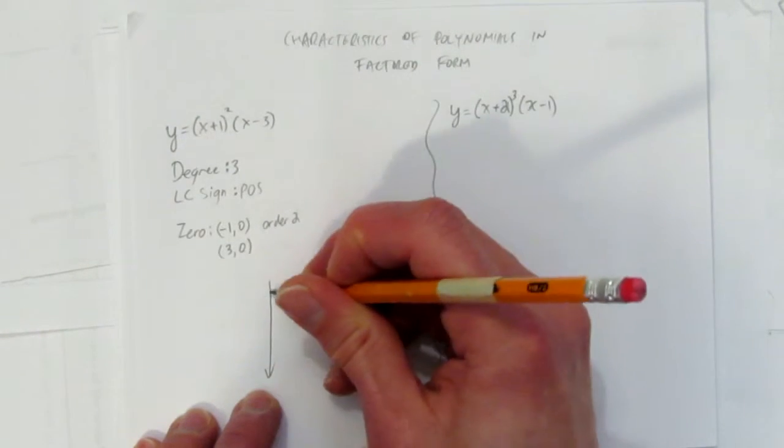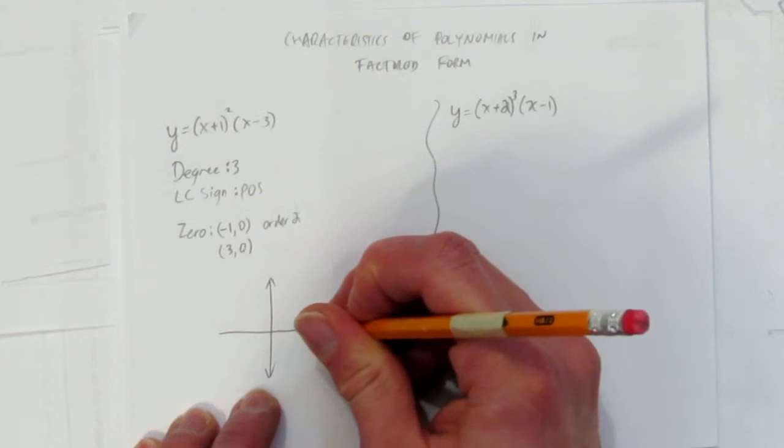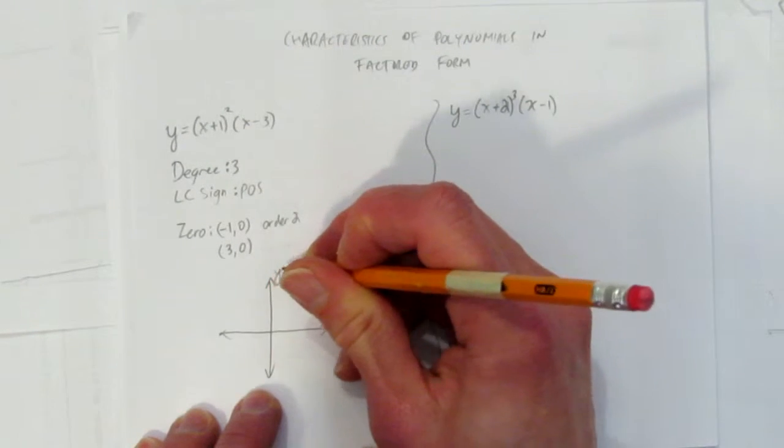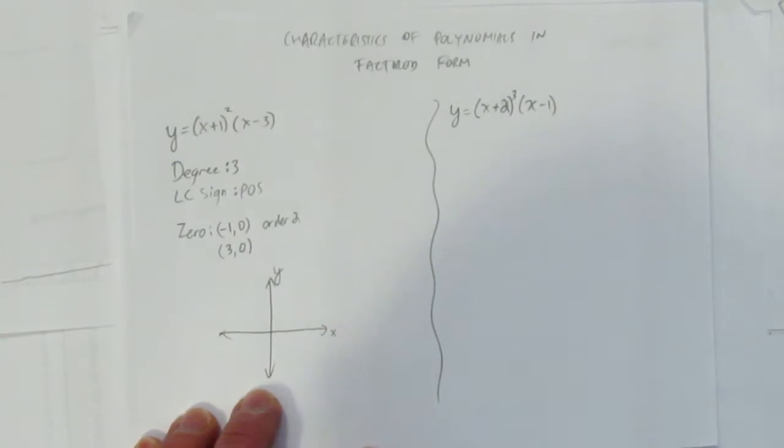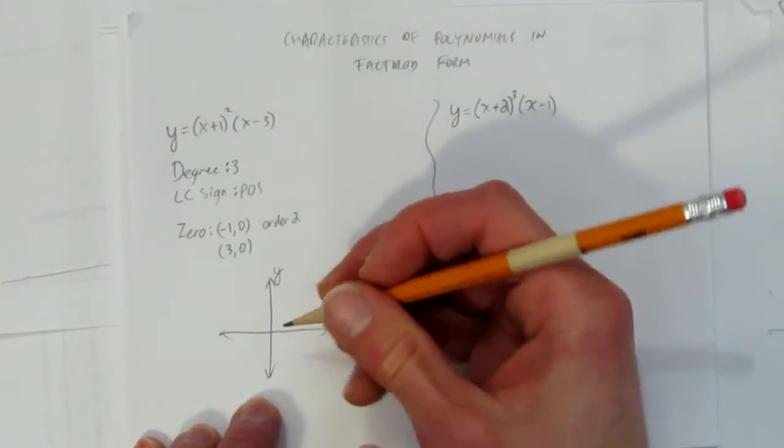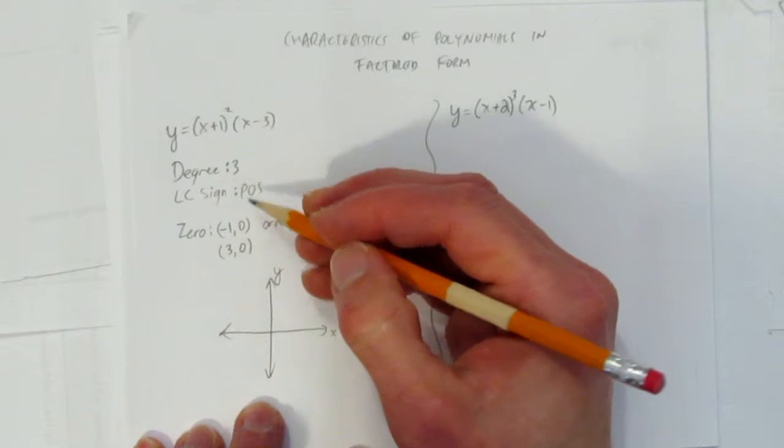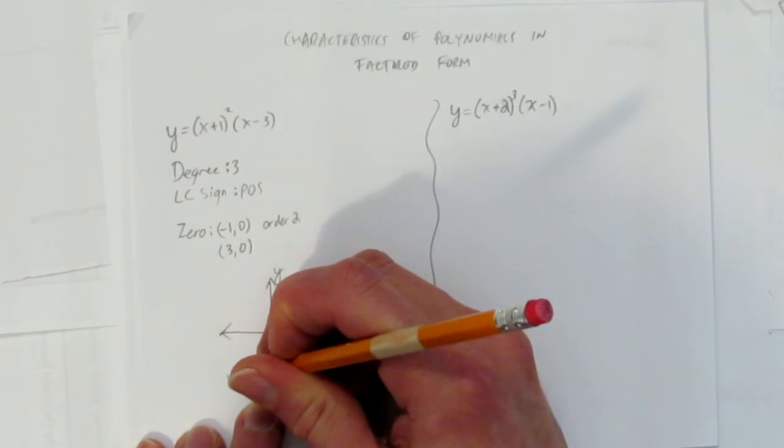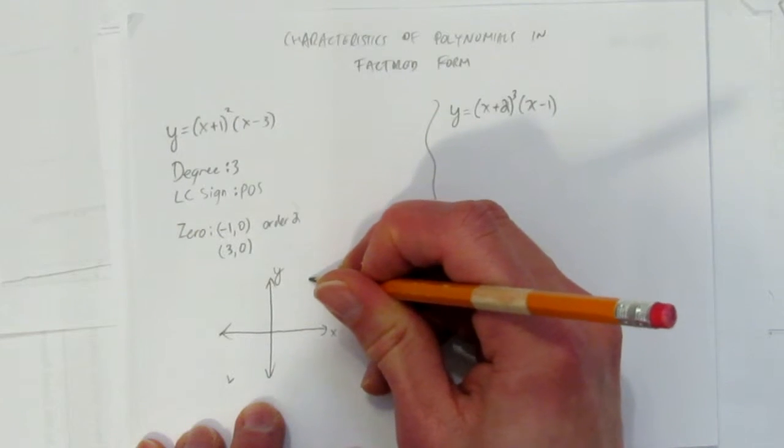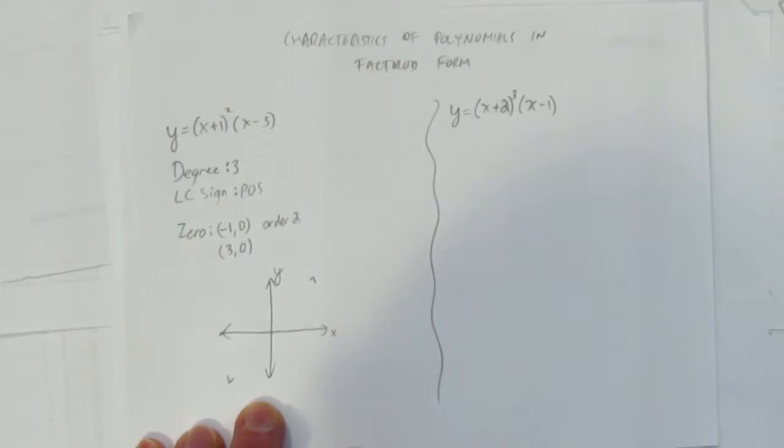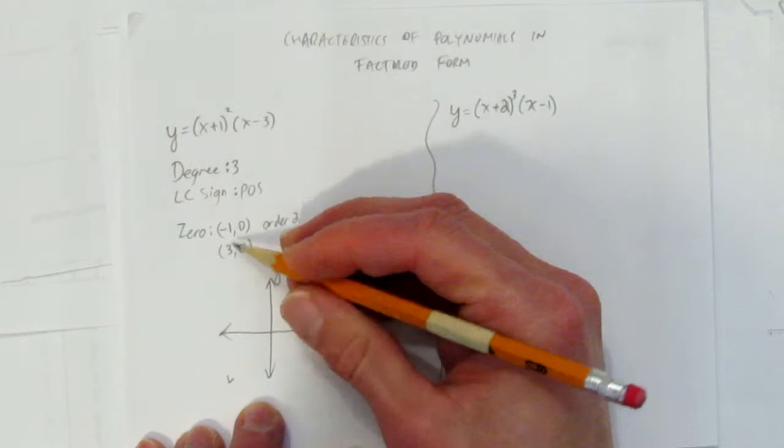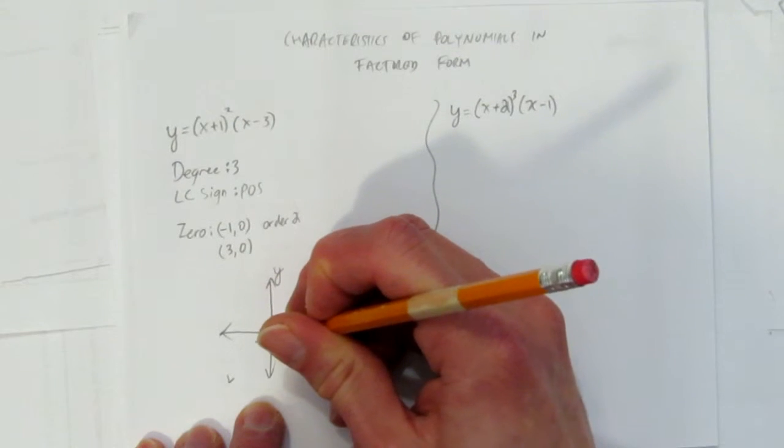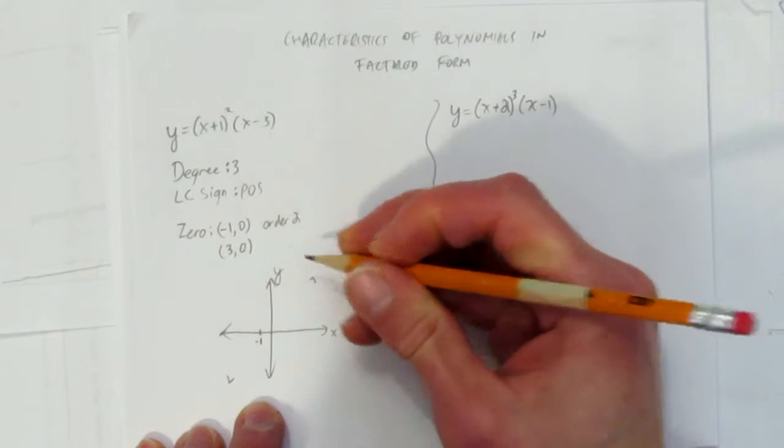It has to be a rough sketch. You don't have to be perfect. You don't have to put a scale. But do put your arrows in your x and y axis. Okay. A degree 3 cubic. Again, I've watched videos on the cubics. If you don't know what a degree 3 cubic looks like, you should know that it starts down here in quadrant 3 and ends up here in quadrant 1.